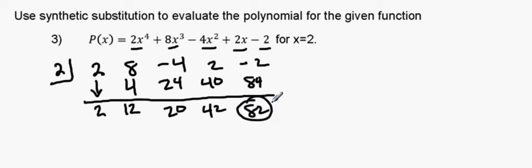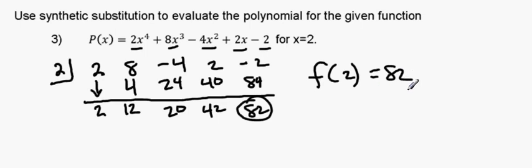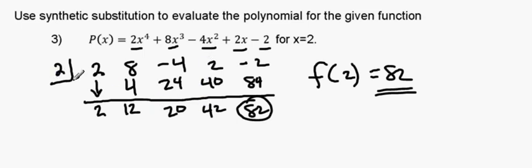The value of the function at 2 is 82. Let's double check our work: bring down the 2, 2 times 2 is 4, 8 and 4 is 12, 2 times 12 is 24, 24 and negative 4 is 20, 2 times 20 is 40, 40 plus 2 is 42, 2 times 42 is 84, 84 and negative 2 is 82. That is the value of the function at 2.